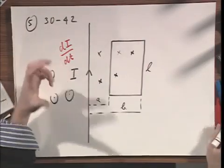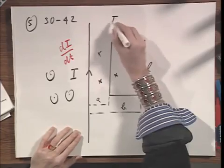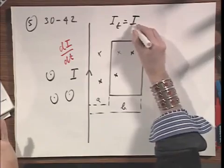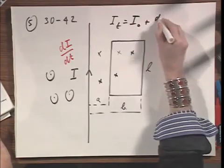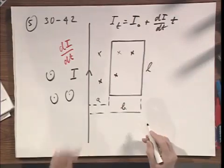The di/dt will make the current grow, and so I as a function of time equals some I₀ at time equals zero, plus di/dt times t. It's growing linearly.